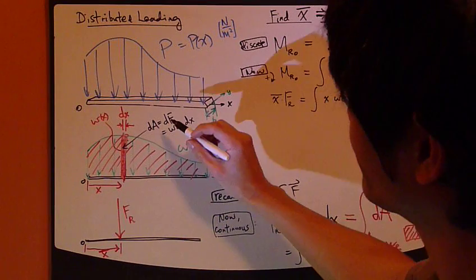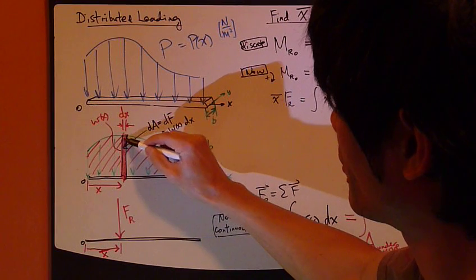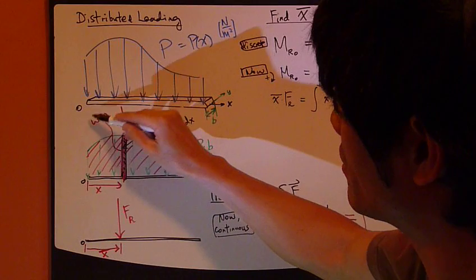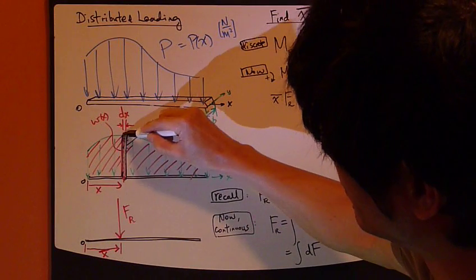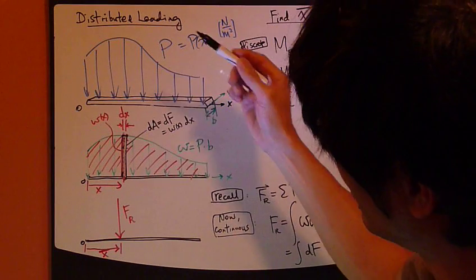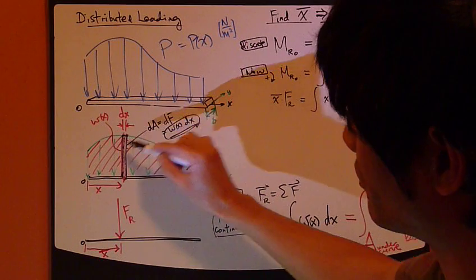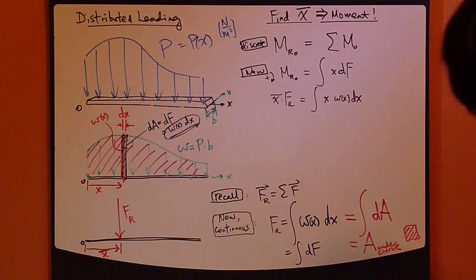And dF is exactly this area right here, this little area. This little area is exactly W times dx. W is this height, dx is this little width. So W times dx is dF.